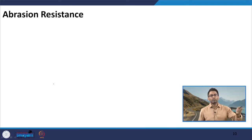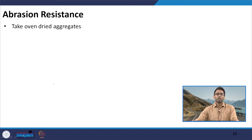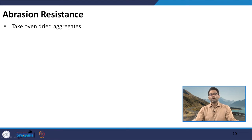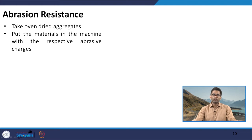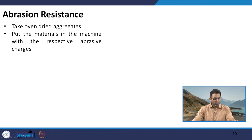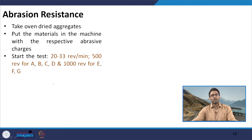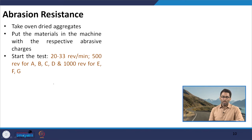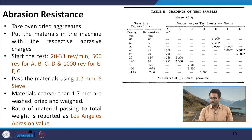Talking about the steps of the Los Angeles abrasion test: first we have to take oven dried aggregates. The type and size of aggregates to choose depends on the type of gradation, which I will show in a table. After we choose the appropriate material, we put this material inside the machine with the respective abrasive charges. Again, the choice of number of abrasive charges is a function of aggregate gradation. We then start the test — the cylinder rotates at an approximate speed of 20 to 33 revolutions per minute, and the number of revolutions depends on the gradation, with options from A to G.